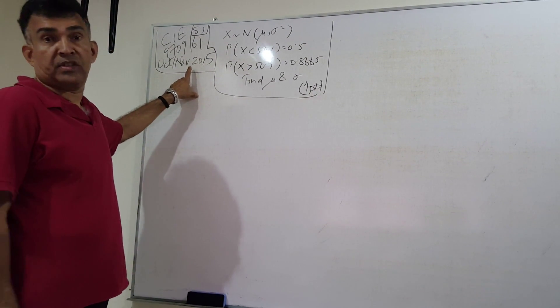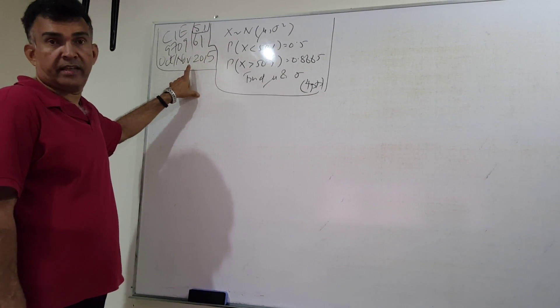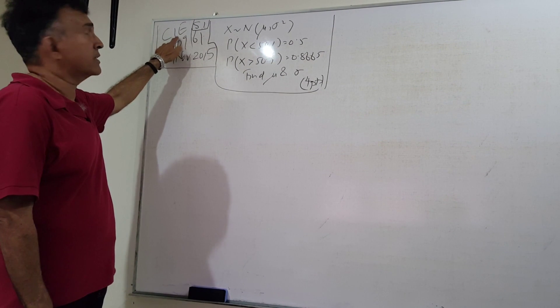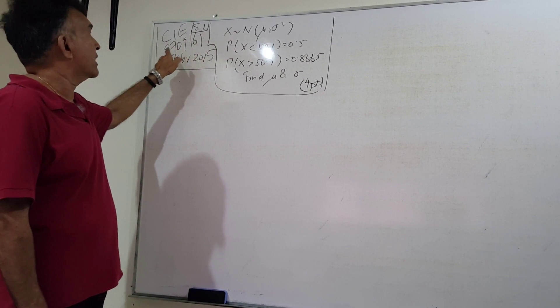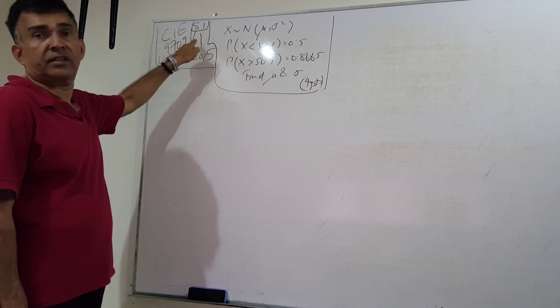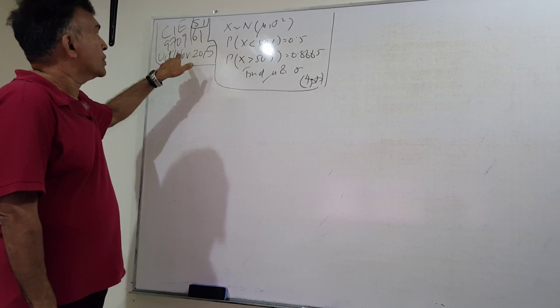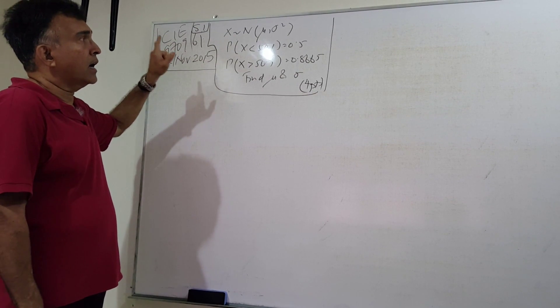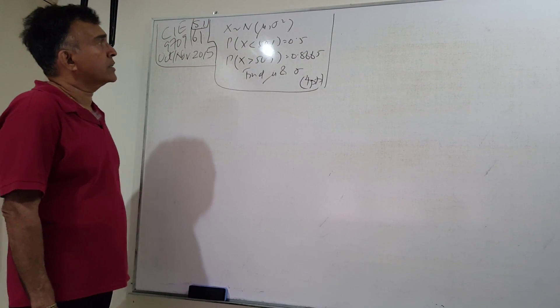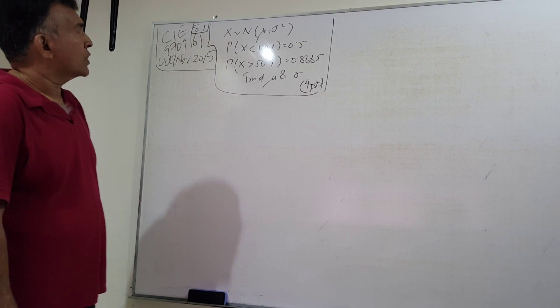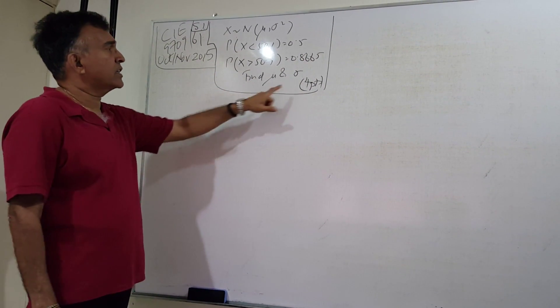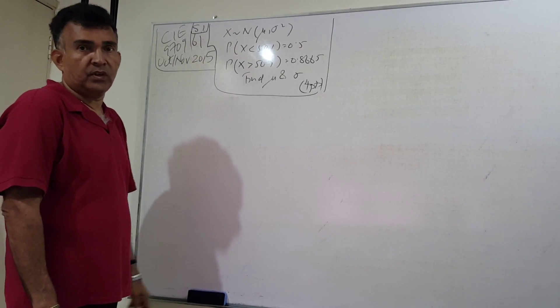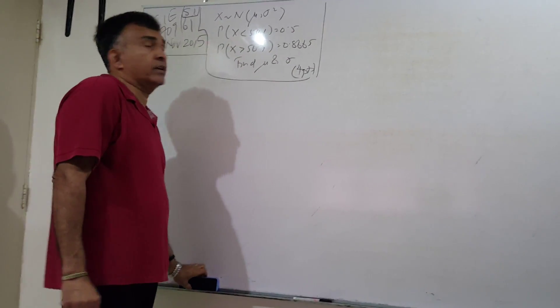The CIE exams S1, subject code 9709/61. This question is question number two and it carries four points.